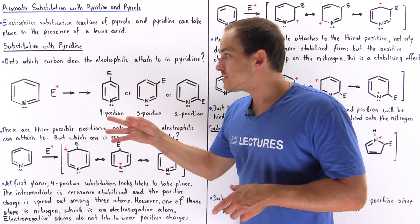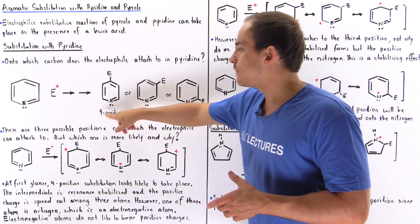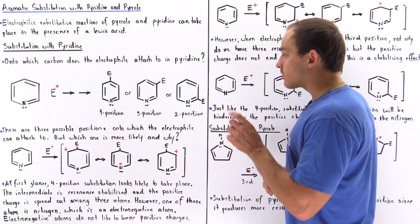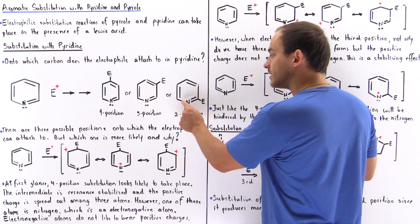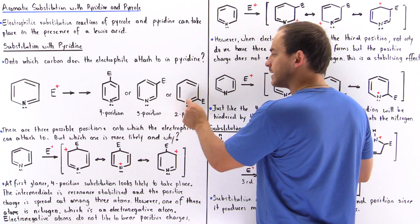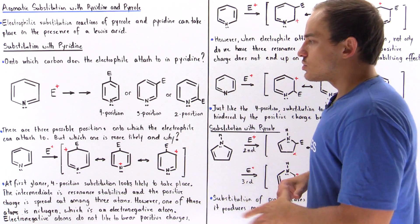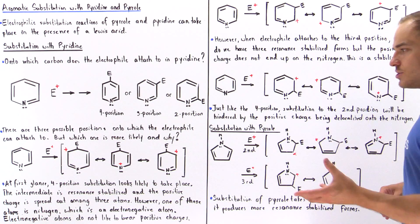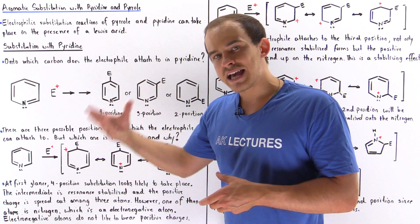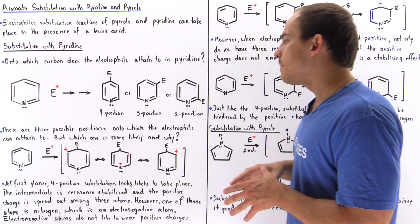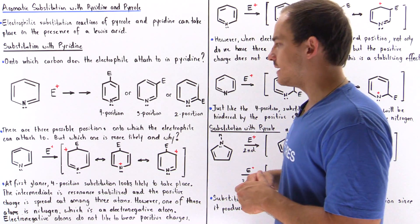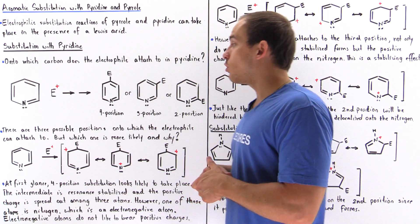Does the electrophile attach to the fourth carbon, the third carbon, or the second carbon, where our count begins with one on the nitrogen — two, three, four, five, six and back to one. So there are three possible positions onto which the electrophile, the Lewis acid, can attach itself, but which one is the most likely to take place and why?